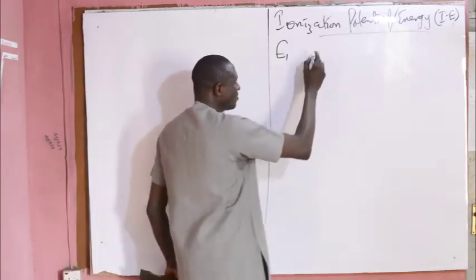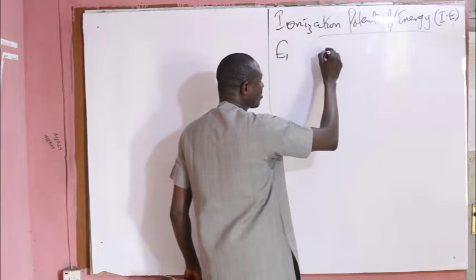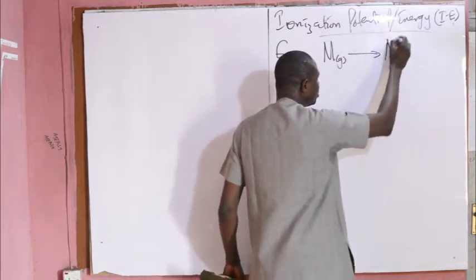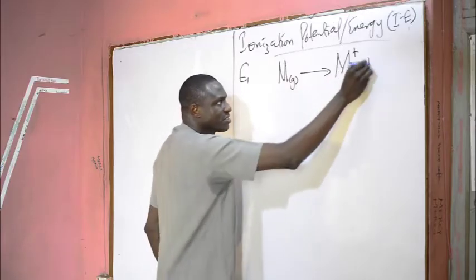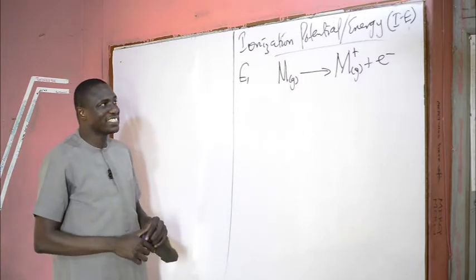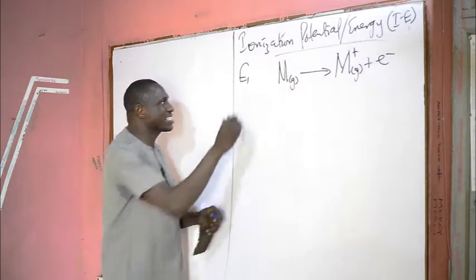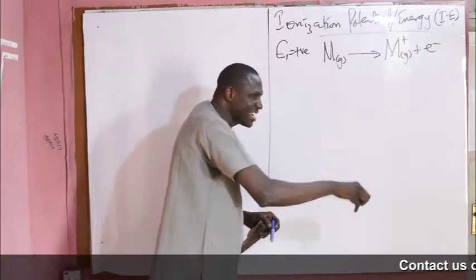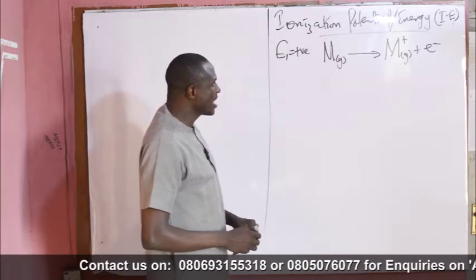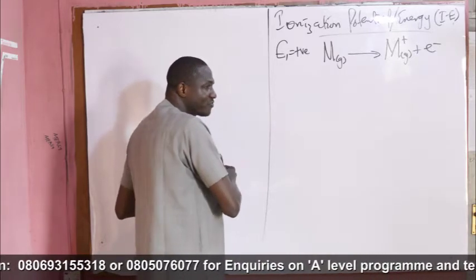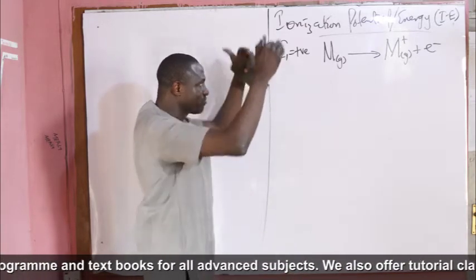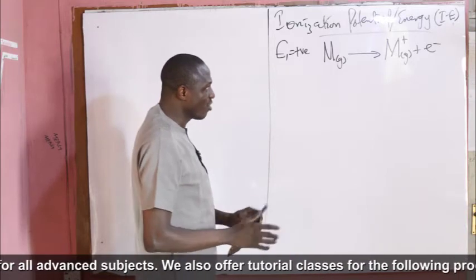For instance, if you have an atom M in gaseous state and you remove one of the valence electrons of this atom, you produce a positively charged ion. So ionization energy is an endothermic process and it carries a positive sign, because you need to add energy before you can take away an electron from the valence shell of an atom. Meanwhile, ionization energy increases across the period and decreases from top to bottom down the group of the periodic table.